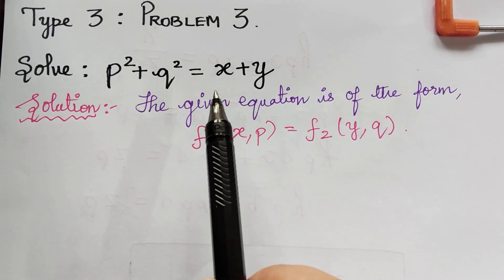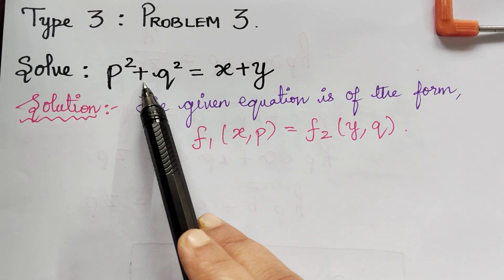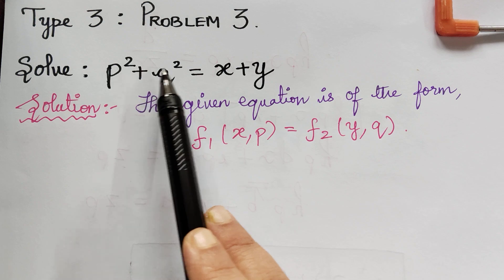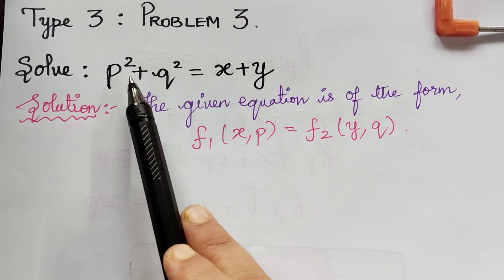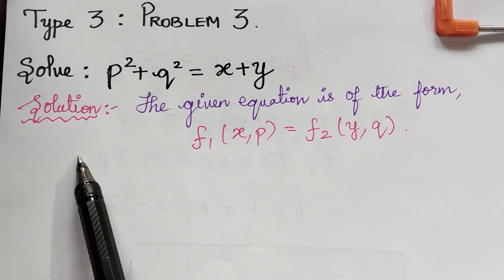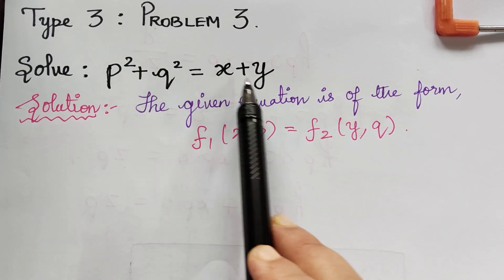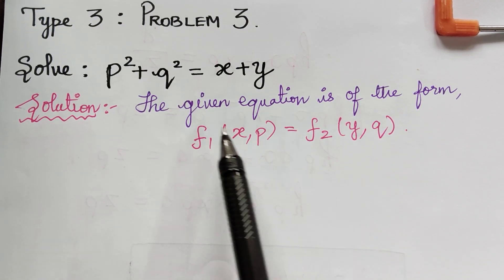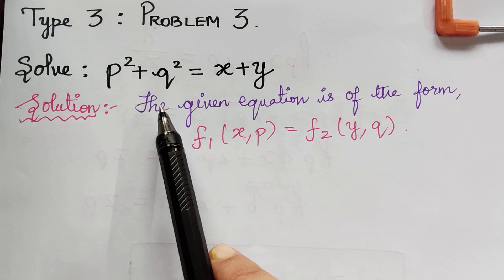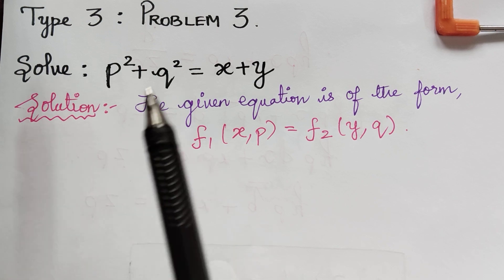So, what we have to do as the first step: we have to gather all x and p to the left side of the equation and y and q to the right side of the equation. So, let us do that.